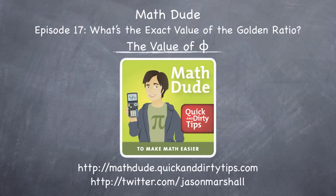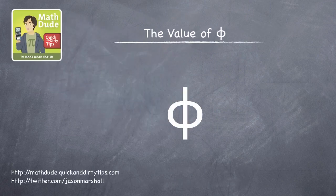Hey math fans, Jason Marshall here with a special look at calculating the true value of phi, the golden ratio, from Math Dude episode 17.